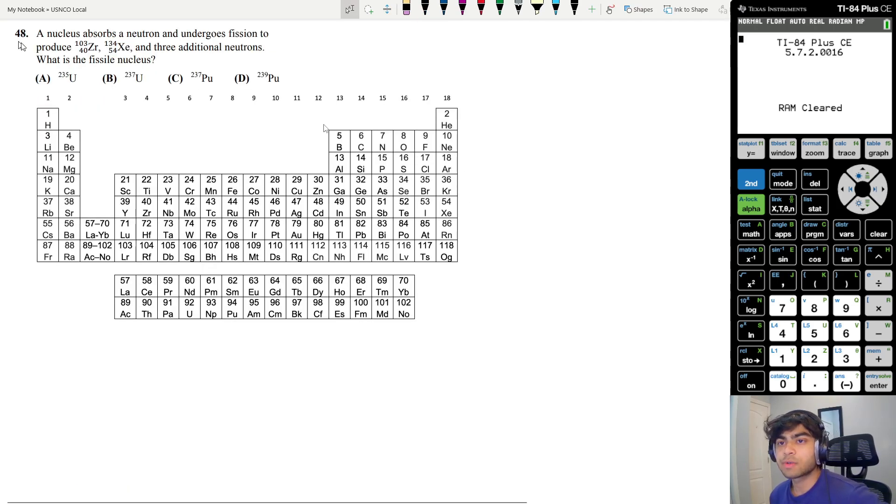Let's move on to the last question, question 48. A nucleus absorbs a neutron and undergoes fission to produce zirconium 103 and xenon 134 and three additional neutrons. What is the fissile nucleus? This question is relatively easy. You just have to keep track of the atomic numbers and the atomic mass numbers. The atomic numbers are 40 and 54, you add them up to get a total of 94 protons, which immediately tells you that this is going to be plutonium.